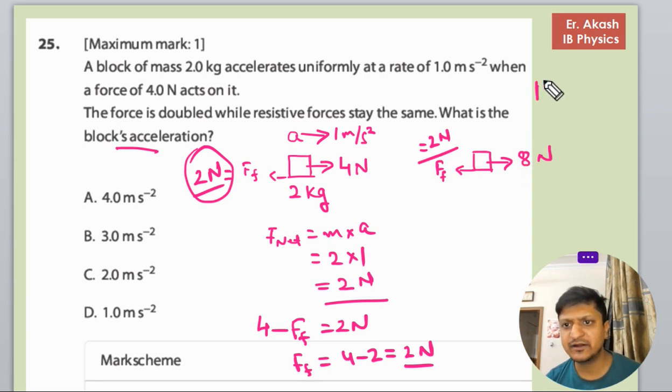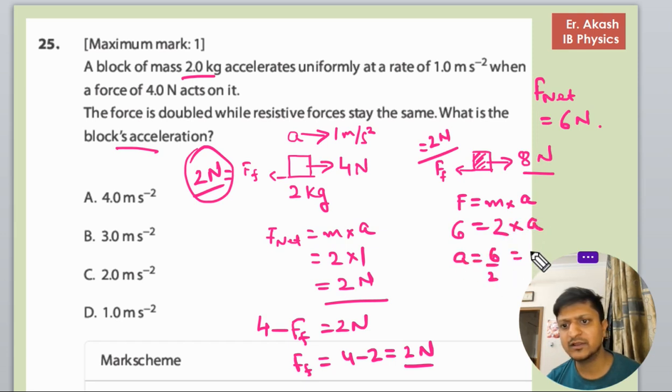The net force for this block is 8 minus 2, which equals 6 newtons. Using F equals mass times acceleration: 6 equals 2 times acceleration, so acceleration is 6 divided by 2, which equals 3 meters per second squared.